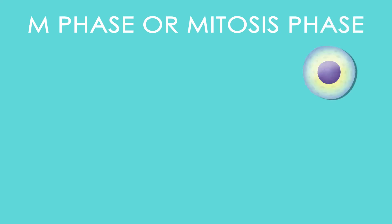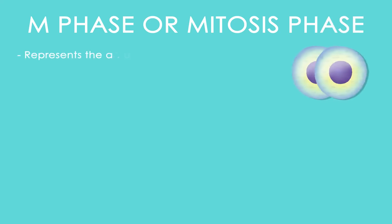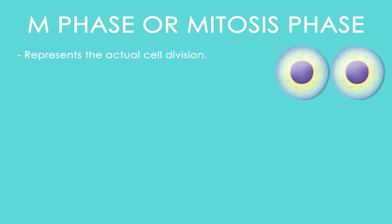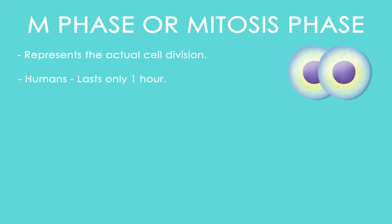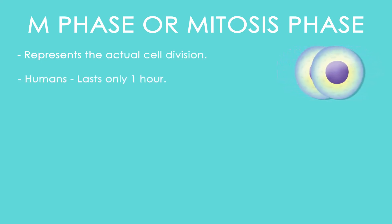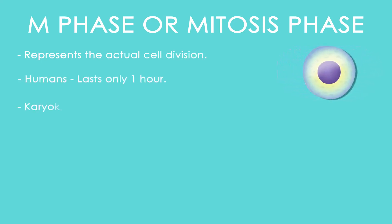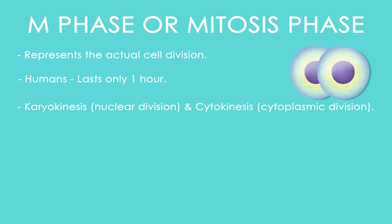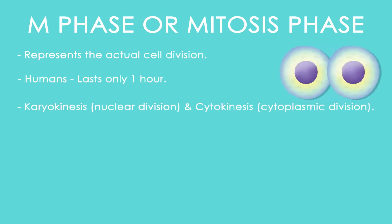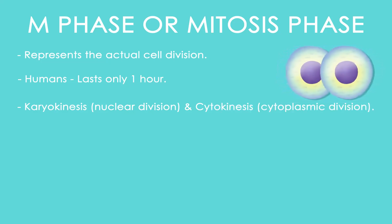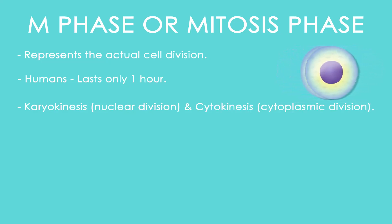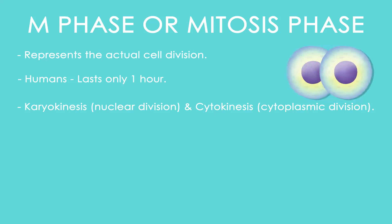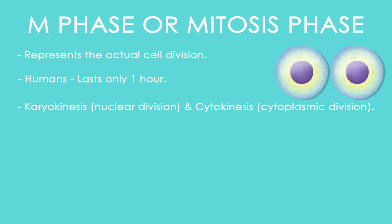The next phase is the M phase, also called the mitosis phase. It represents the actual cell division. In the human cell cycle, it lasts for only about one hour and involves the division of the cytoplasm.